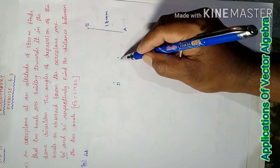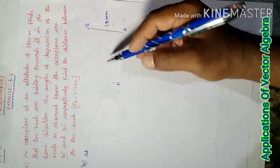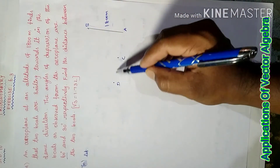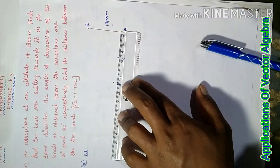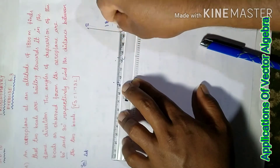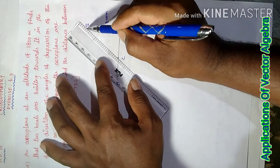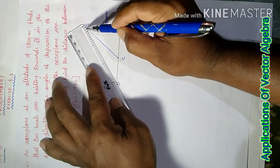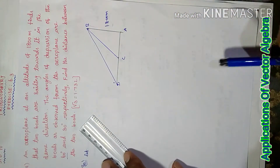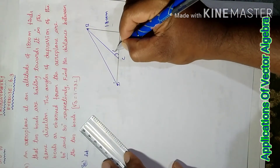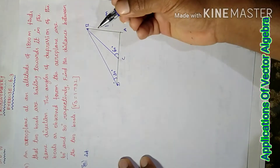From the plane, you can see two boats in the same direction. The angle of depression to the first boat is 60 degrees, and the angle of depression to the second boat is 30 degrees. We need to find the distance between the two boats. This is the ground level. The first angle is 60 degrees and the second angle is 30 degrees.